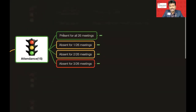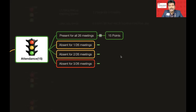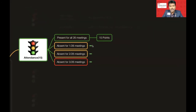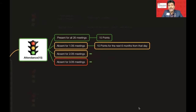If you are present for all 26 meetings you get 15 points in the Attendance category. If you are absent even once, you will get only 10 points instead of 15. You lose those 5 points for the next six months, even if you attend all other 25 weeks.